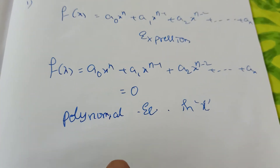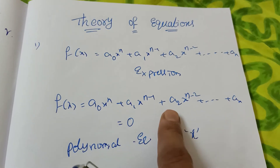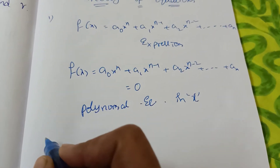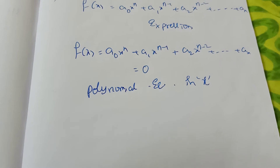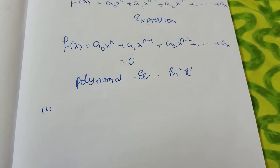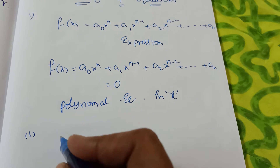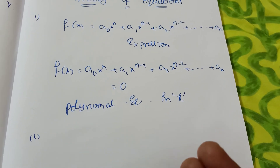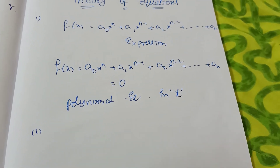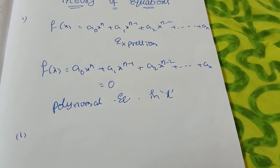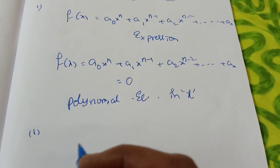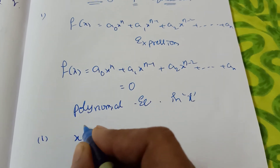Now, what is the relation between coefficients and the roots? These are the coefficients, and we are discussing the relation — this is very important. What is S1, what is S2? I'm taking one cubic equation. A cubic equation has three roots, just as a quadratic equation — 'quad' means two — has two roots.